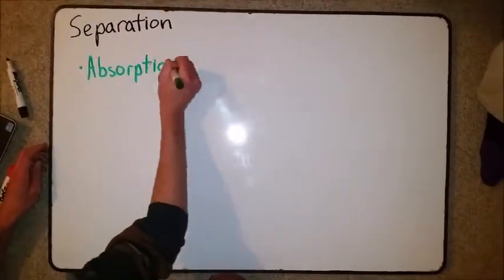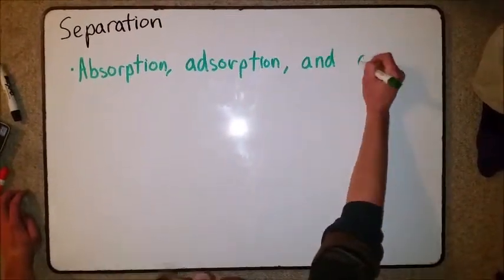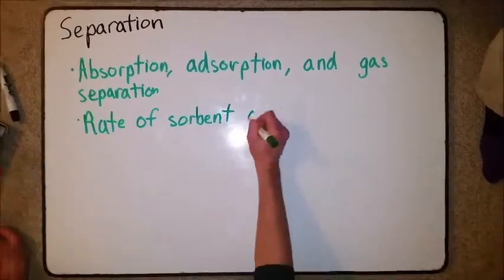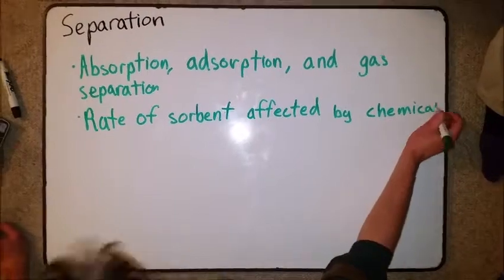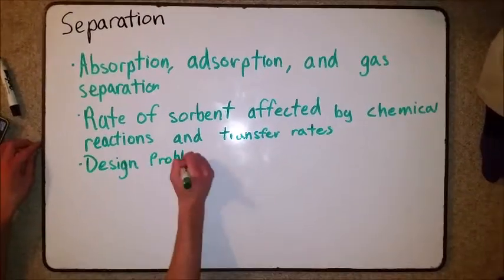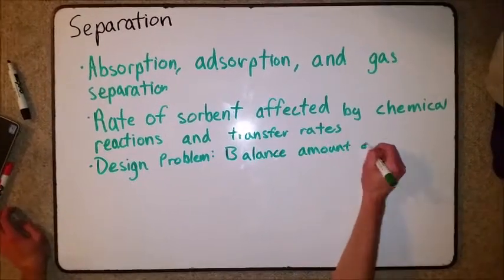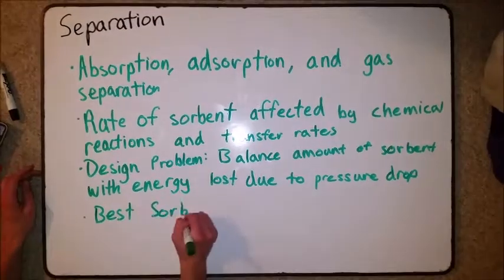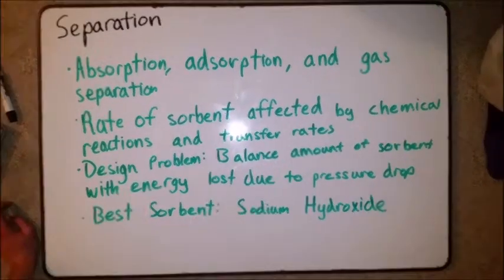Separation: With separation, there is absorption, adsorption, and gas separation. The rate of sorbent in the separation process is affected by chemical reactions and the transfer rates. The design problem to overcome is to balance the amount of sorbent with energy lost due to pressure drops. The best sorbent, as indicated through testing, is sodium hydroxide.